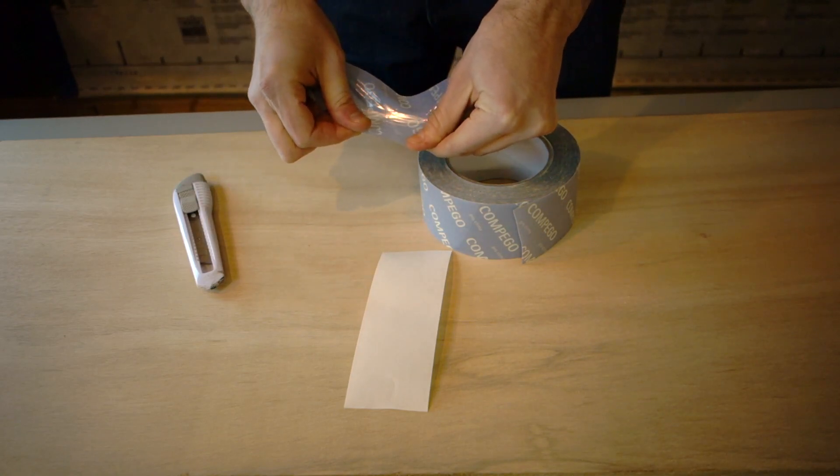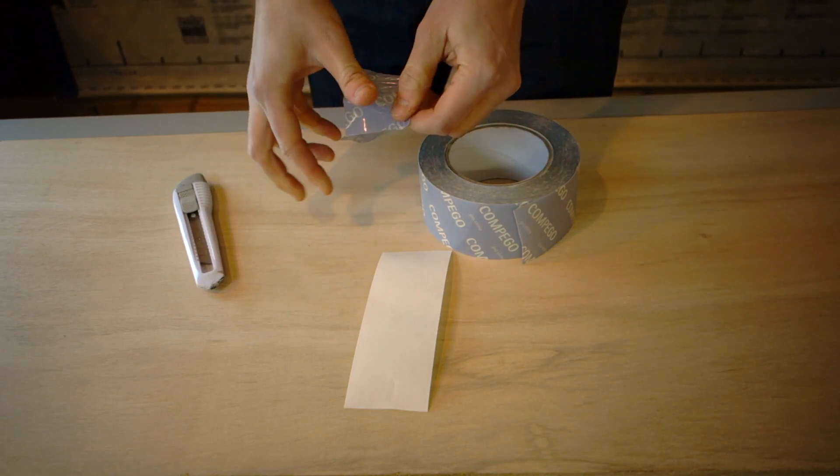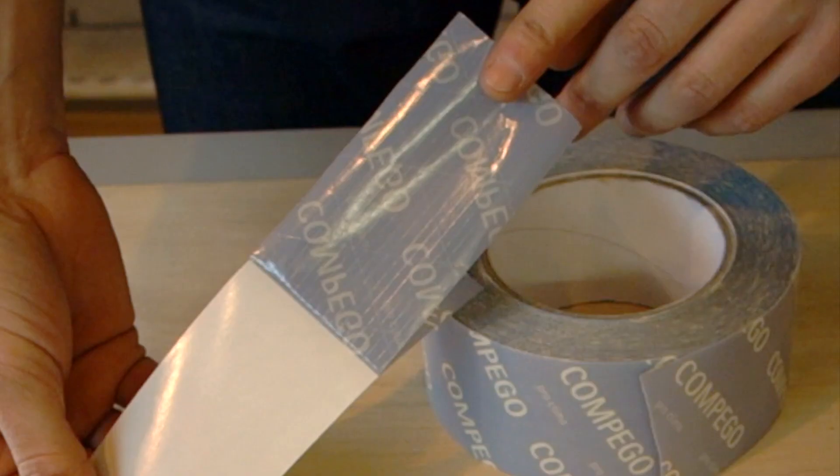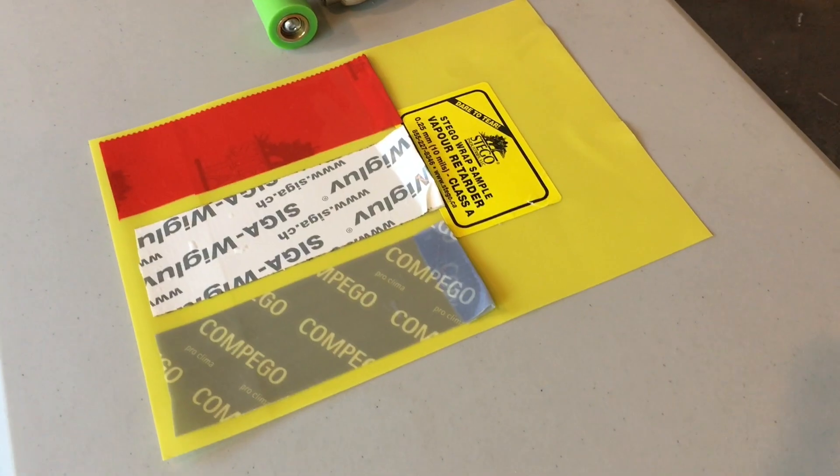Compego is made from a stretchable ultra-low VOC polyethylene with a thin threaded reinforcement that is sturdy yet capable of being torn by hand.